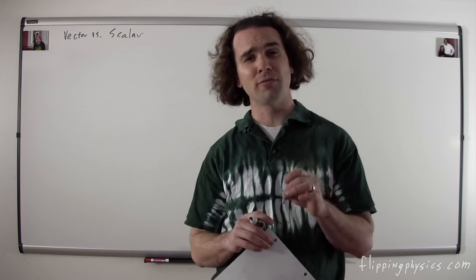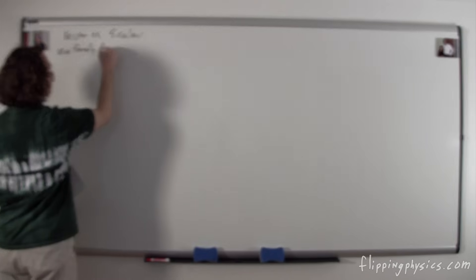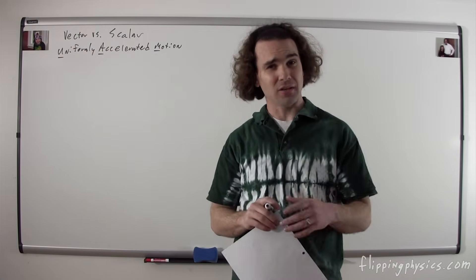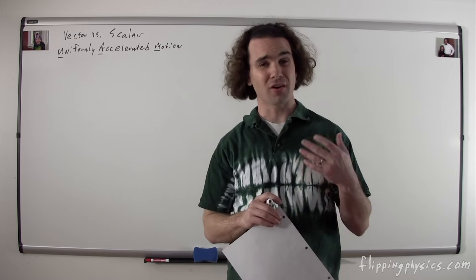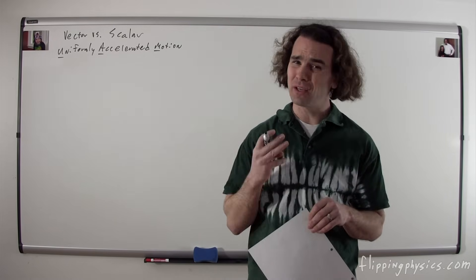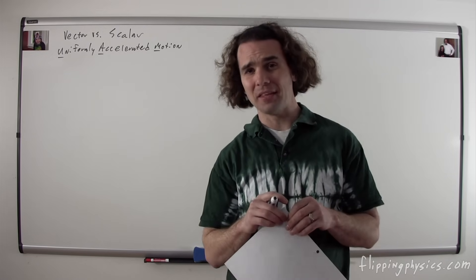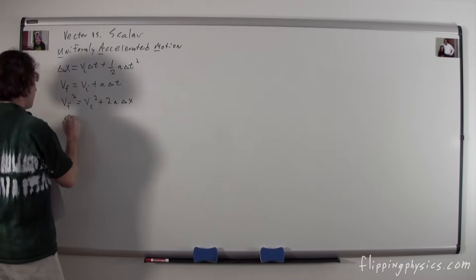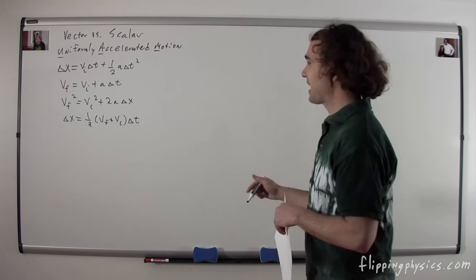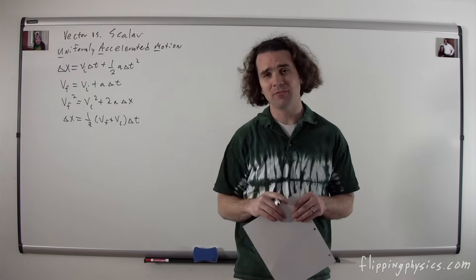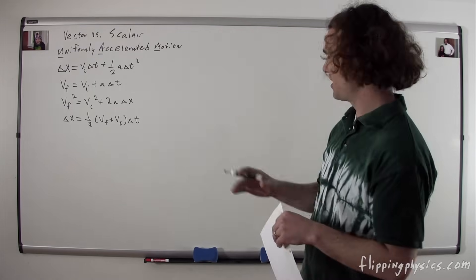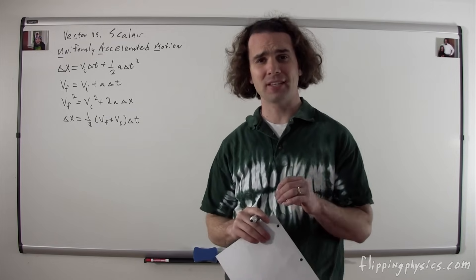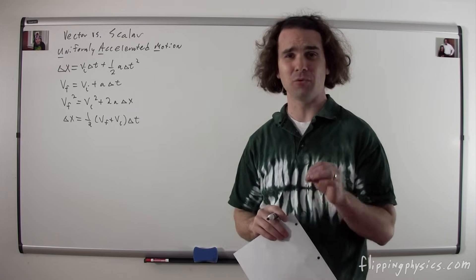Next, the concept of uniformly accelerated motion. The basic idea is that when the acceleration is uniform — in other words, the acceleration equals a number — there are a basic set of equations you can use. There are only three equations given on the equation sheet; however, there are actually four. I'm going to write them out. There are four UAM equations. You can use these whenever the acceleration equals a number.